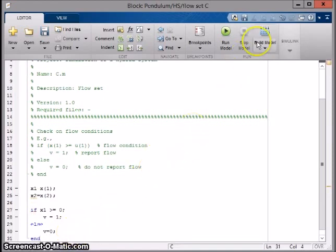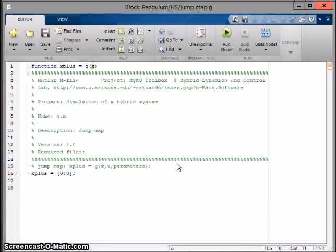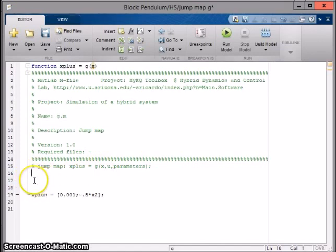Now go to the jump map g. The jump map will correct the ball's velocity after it has collided with the wall. Set x1 equal to 0.001 and x2 to negative 0.8 times x2 corresponding to the ball's velocity in the opposite direction. However, for the function to draw upon the value of x2, we need to define the state: x2 equal to x2.